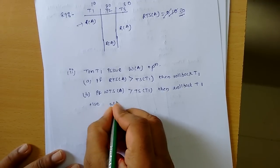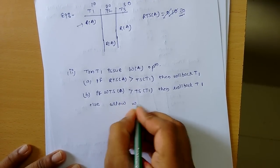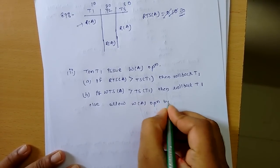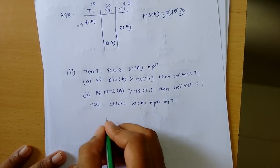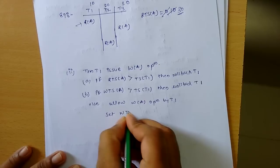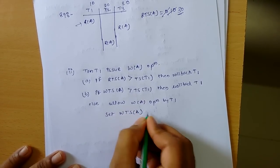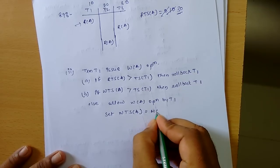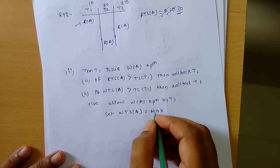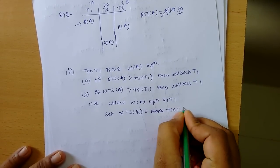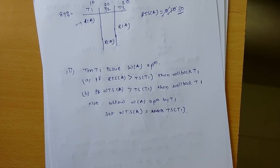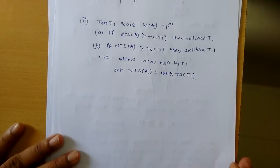Otherwise, allow the write operation by T, and set the write timestamp of A to the timestamp of T. This is the complete basic timestamp ordering protocol.